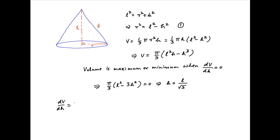Since dV/dH = π/3(L² - 3H²), the second derivative of V with respect to H equals π/3(0 - 6H), which is clearly negative.